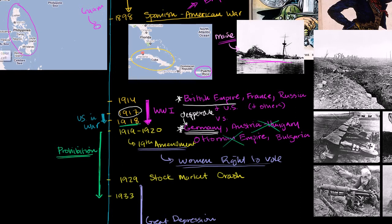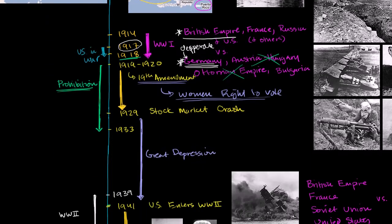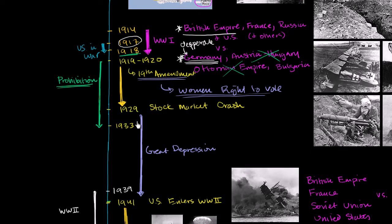Also at this period in the 1920s, you have another post-war economic boom that really develops into a post-war economic bubble, all the way until 1929. And then you have the stock market crash. After that period, the Great Depression ensues — and this was a global Great Depression — and it continues all the way to the US entry in World War II. And I'll leave you there.